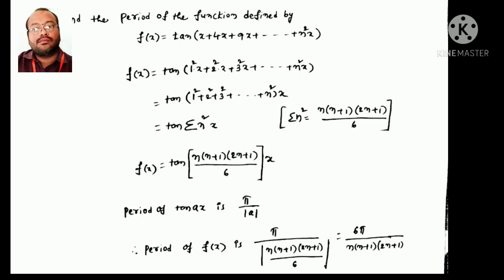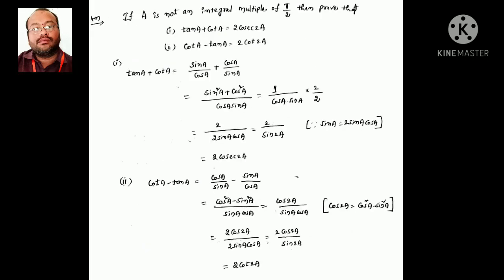So the period of the given function will be 6π / [n(n+1)(2n+1)]. Next question: if a is not an integral multiple of π/2, prove two results. For the first, replace tan a as sin a/cos a and cot a as cos a/sin a. Simplifying gives 1/(cos a · sin a).